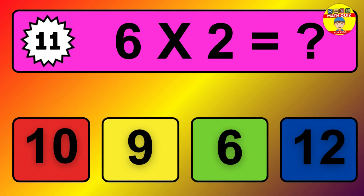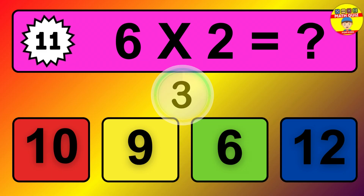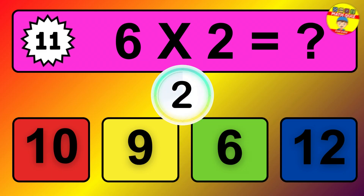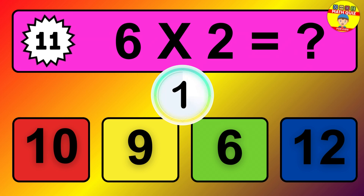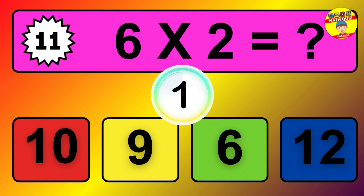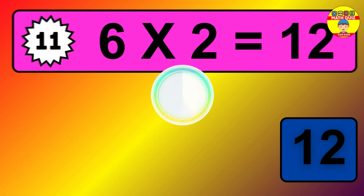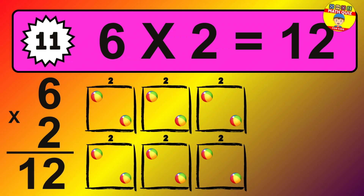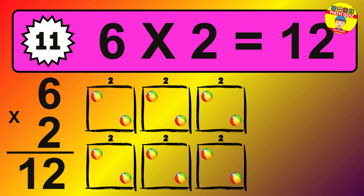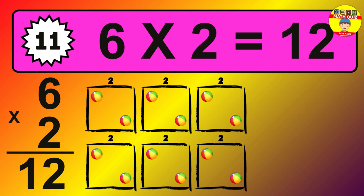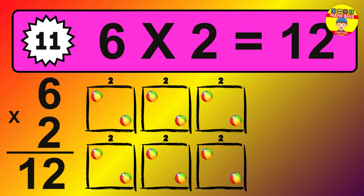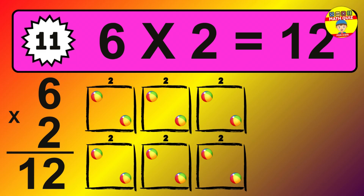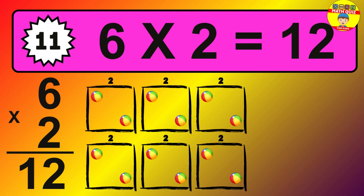Question 11. 6 times 2 equals what? The answer is 6 times 2 is 12. To calculate, we have 6 groups with 2 balls each one. So, how many balls do we have? 12 balls.